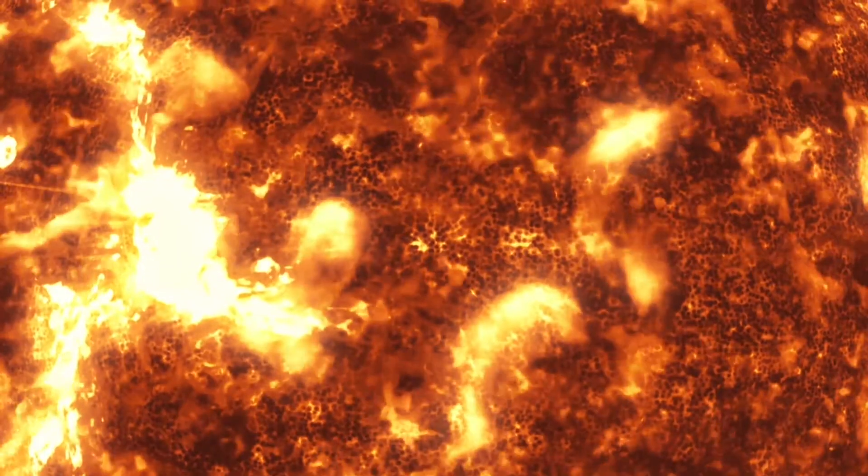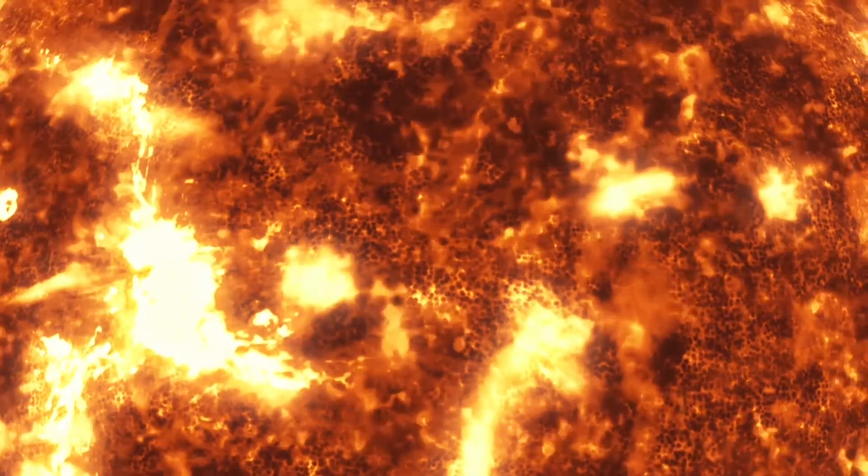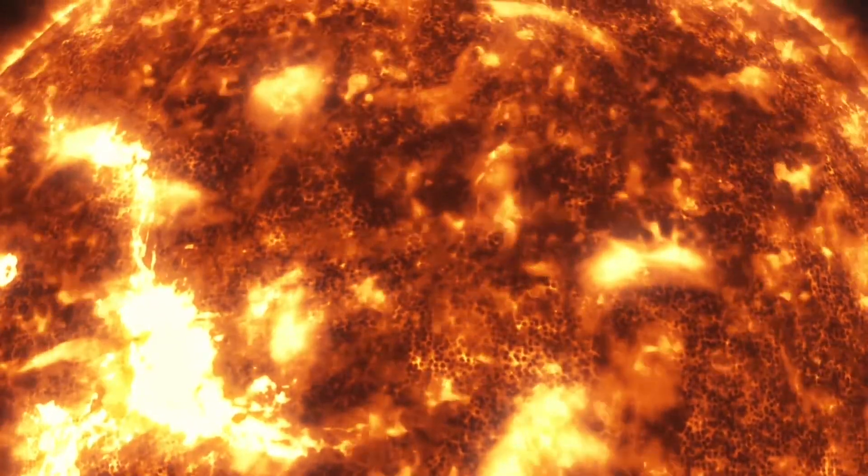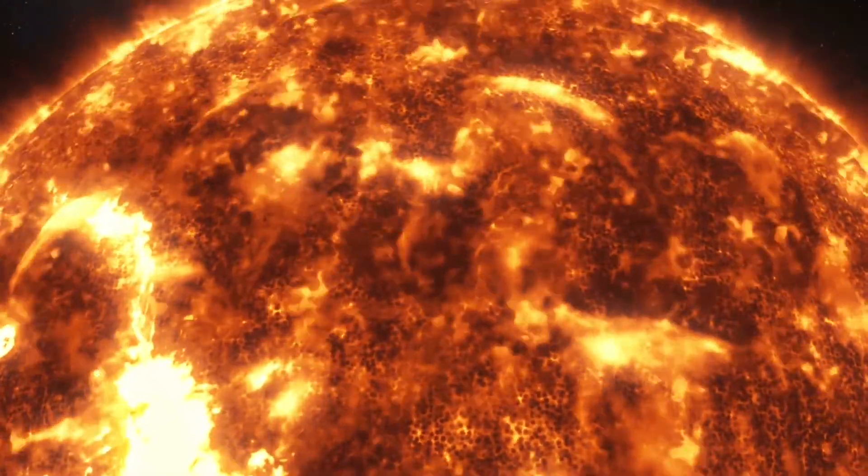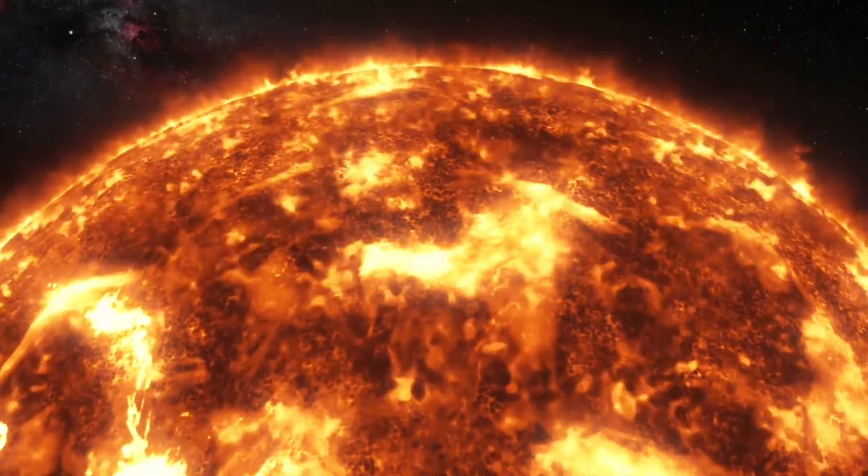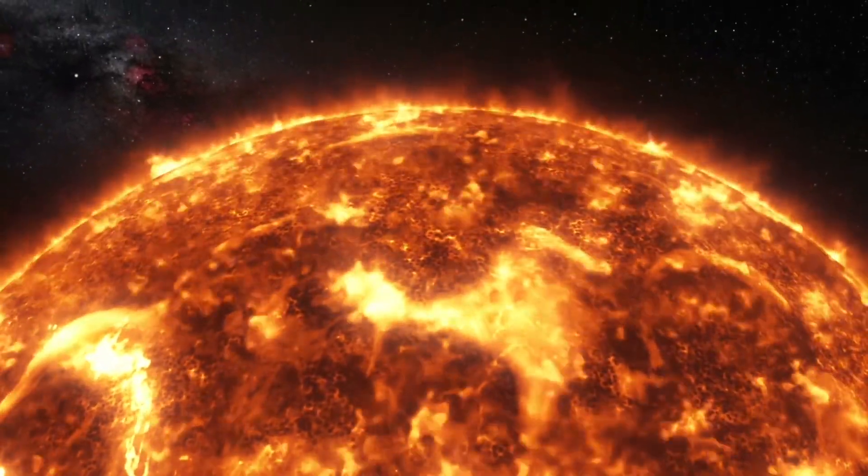8. Gravitational pull is 27 times stronger at the surface of the Sun than it is at the surface of the Earth. If, by a miracle, you don't get pulverized by the immense temperature, you will weigh 27 times more on the Sun.